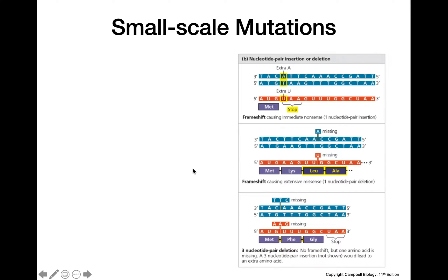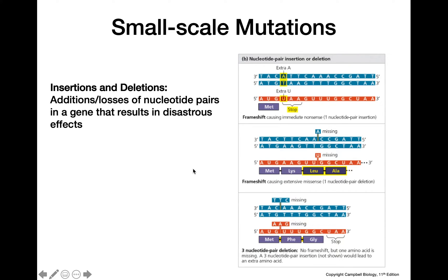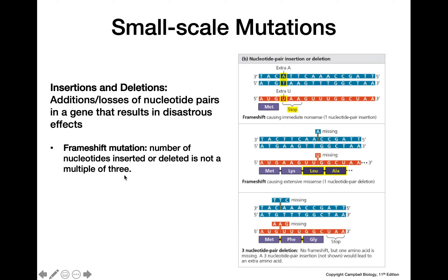Some small scale mutations can be caused by insertions and deletions — the addition or loss of nucleotide pairs — which can oftentimes result in pretty disastrous effects. The way that happens is by causing a frameshift mutation. A frameshift mutation means that the number of nucleotides inserted or removed from a gene was not a multiple of three.